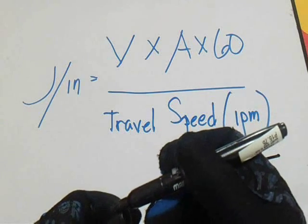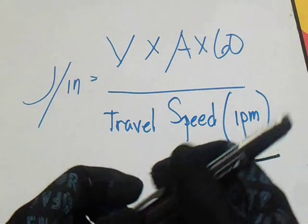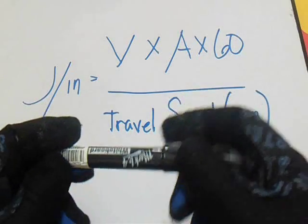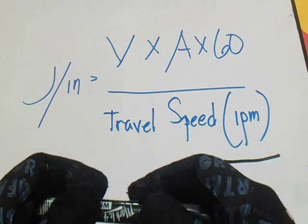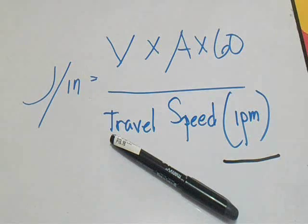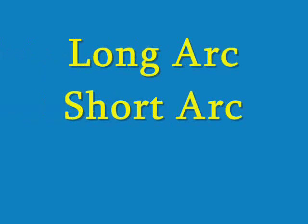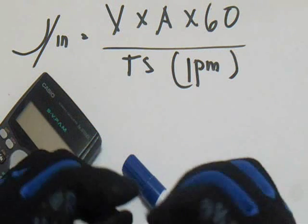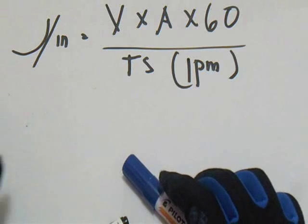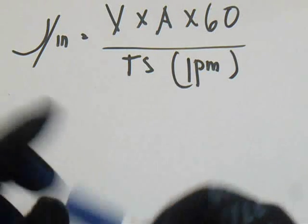So what is IPM? IPM is inch per minute — that is the travel speed. Okay, so let's do an example for this welding heat input. We have a long arc, and I will also show you the short arc computation. So let's start with the long arc length example.